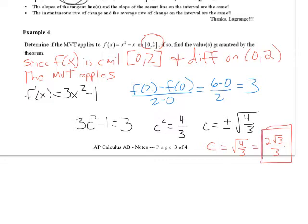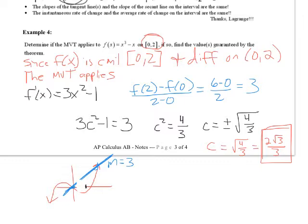That is the location where the slope is equal to 3. The curve looks something like that, and between 0 and 2 our secant slope is 3. Then somewhere over there we hit a tangent line whose slope is also 3. That tangent line occurs at x equals 2 root 3 over 3.